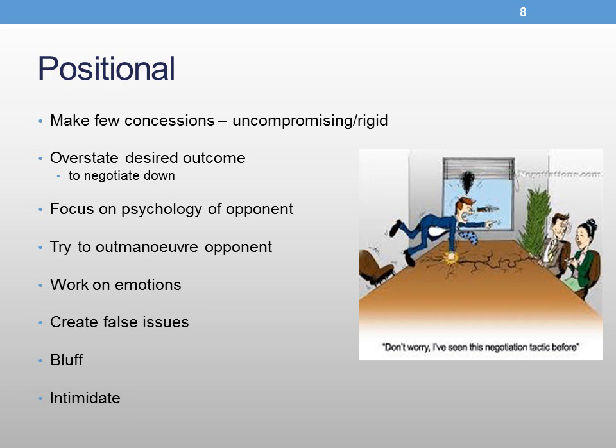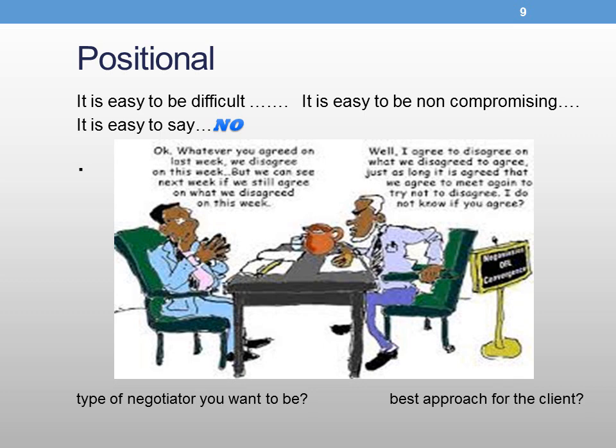It is safer and easier to say no, to be rigid and not make compromises, than it is to negotiate and make concessions and have a different outcome. Slide 9 — it's easy to be difficult, easy to be non-compromising, easy to say no. It's all about the type of negotiator you want to be and the best approach for your client.